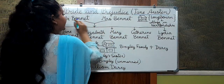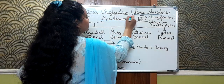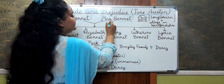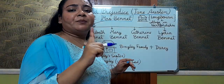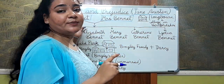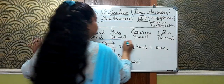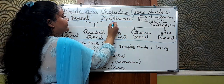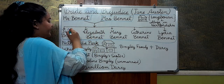Let us begin with the two most important characters: Mr. Bennet and Mrs. Bennet. In the very beginning of the novel, on the first page, we are introduced to the Bennet family. Mr. Bennet and Mrs. Bennet, as the name suggests, are a couple and they have five daughters.